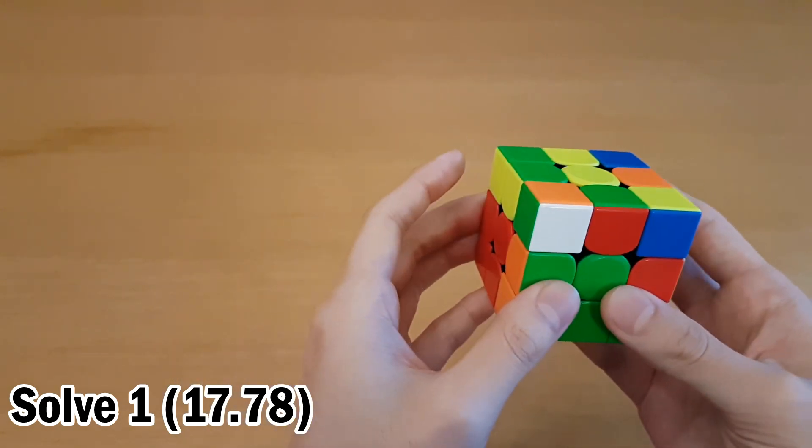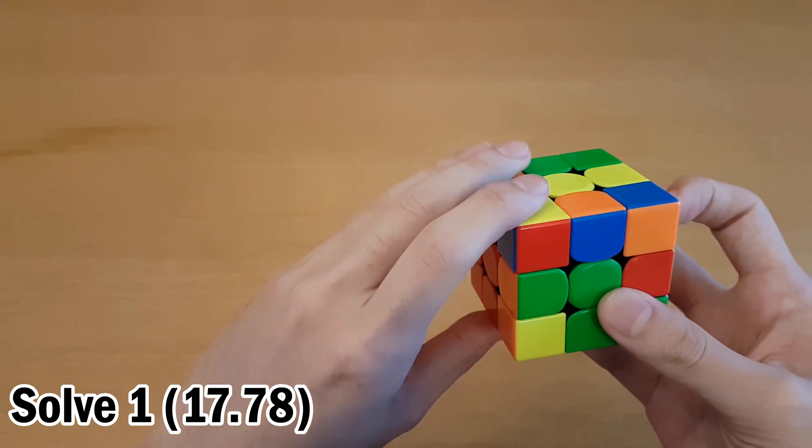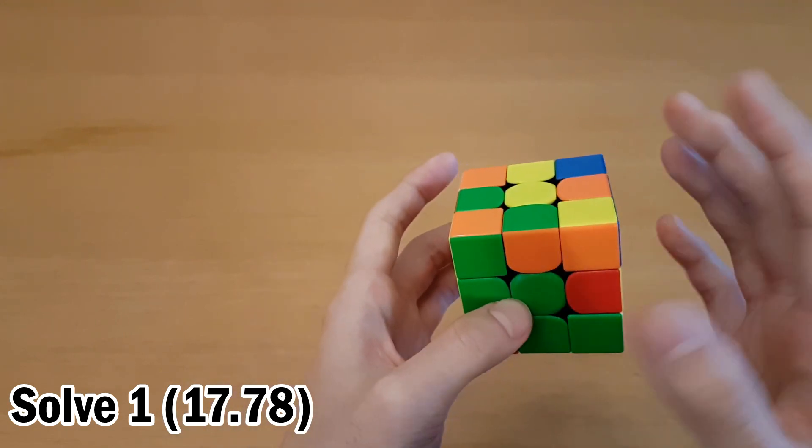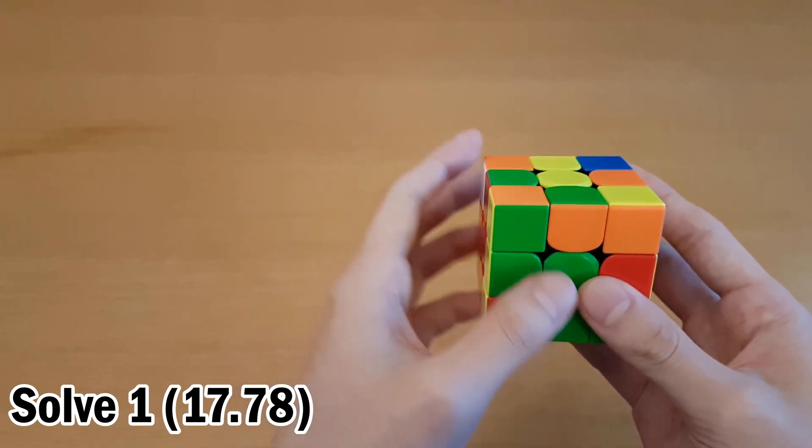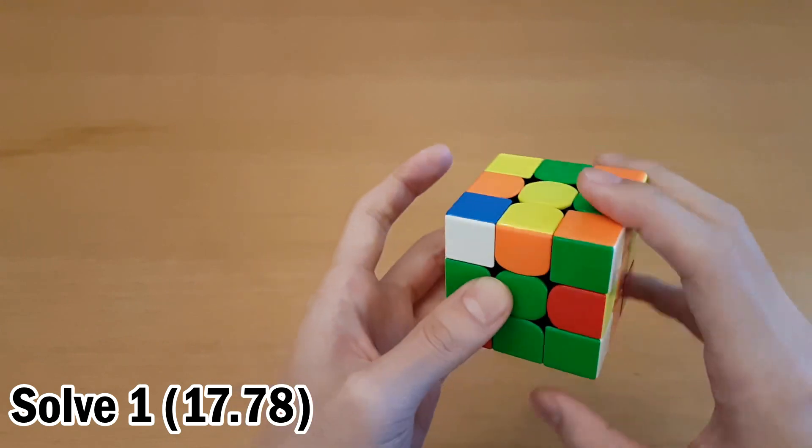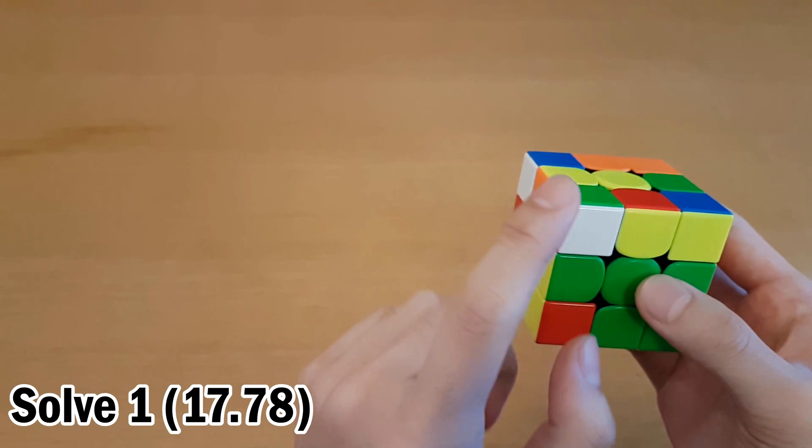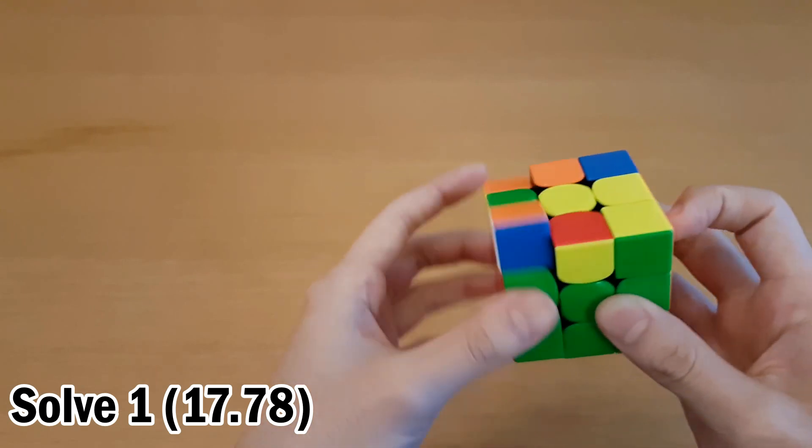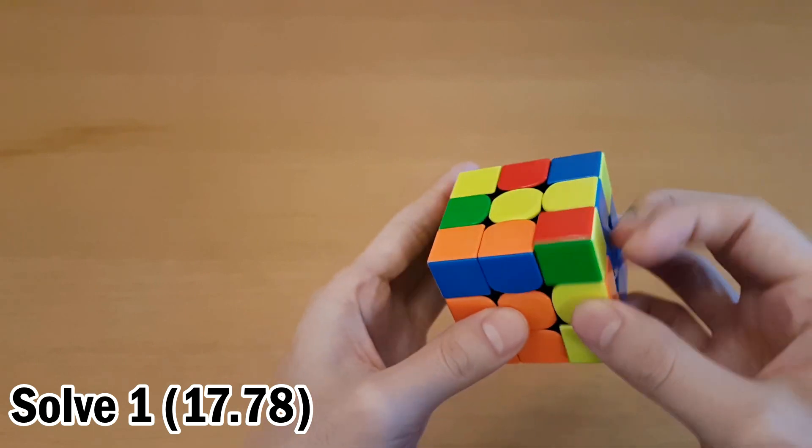Once you're facing this side, what you did was re-grip, take it out like that. I'm not going to comment too much on this, but remember, just check out the finger tricks tutorial to avoid these re-grips. And then this one you re-gripped again. Then you did this pair next, pretty straightforward, and then these two. Everything else is pretty good.